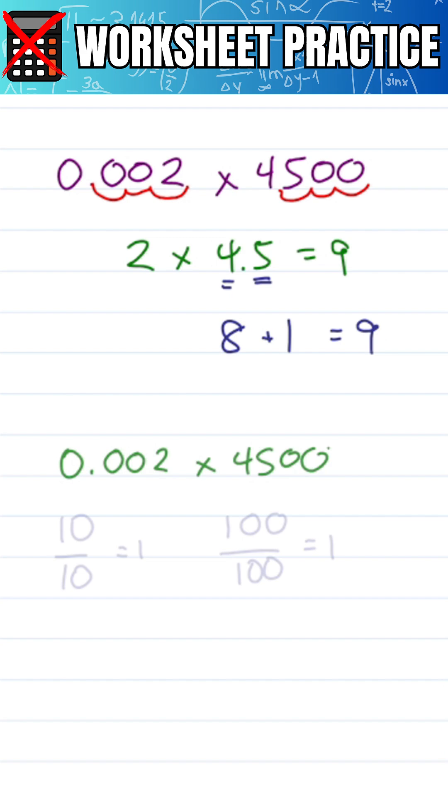And if you don't want to turn 4500 into a decimal, just move it twice to the right, twice to the left, and that gives you 0.2 times 45.